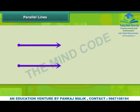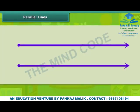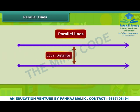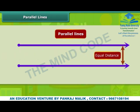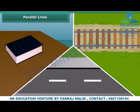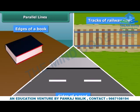Another set of lines are those which do not intersect. Such lines which do not meet at all are called parallel lines. The distance between these lines remains constant. Here, two lines L and M do not intersect, so they are parallel lines. A few examples of parallel lines from daily life include: sides of a road, tracks of railway lines, and edges of a book.